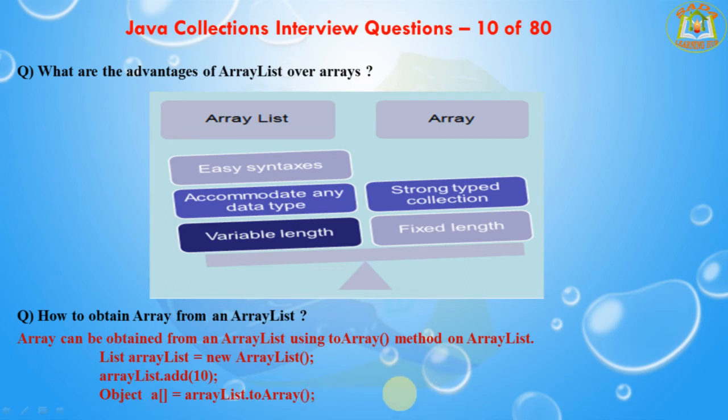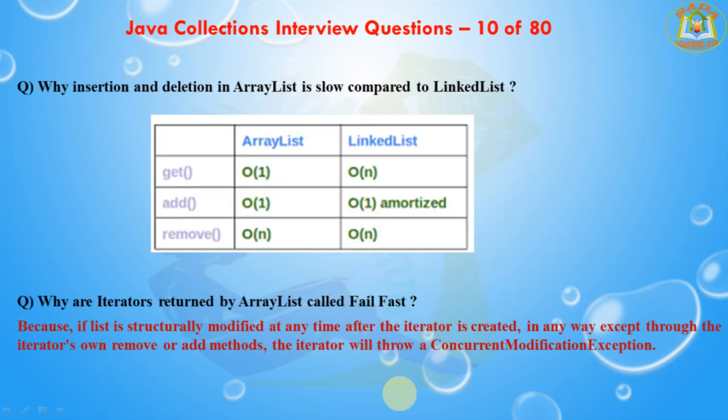The next question: Why is insertion and deletion in ArrayList slow compared to LinkedList? ArrayList internally uses an array to store elements. When that array gets filled, a new array of roughly 1.5 times the size is created and all data is copied to the new array. During deletion, all elements after the deleted element have to be moved one step back to fill the space.